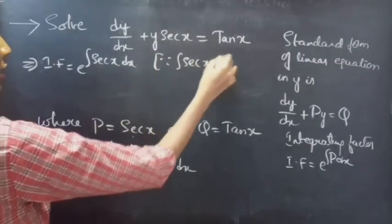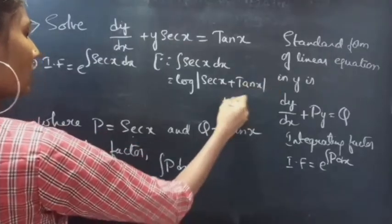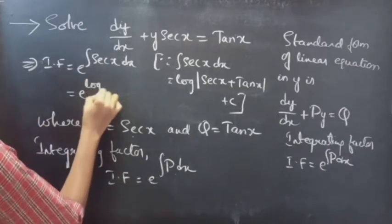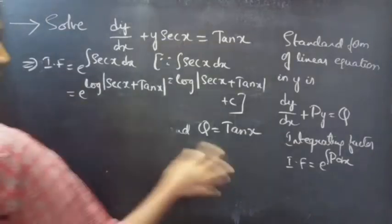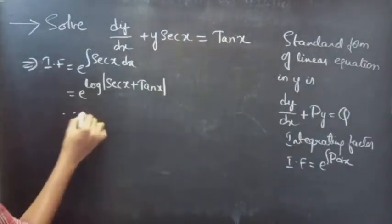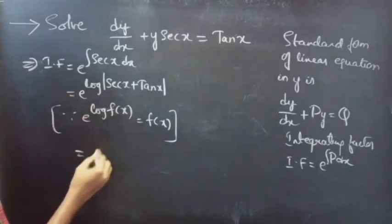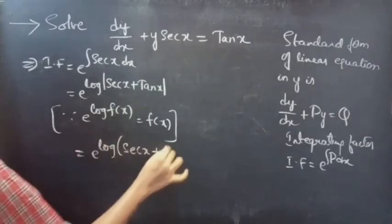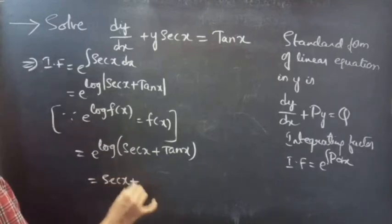So the integrating factor equals e to the power of the integral of secant(x) dx. Since we know that the integral of secant(x) dx equals log|secant(x) + tan(x)|, and since e to the power of log of a function equals that function, the integrating factor becomes secant(x) plus tan(x).